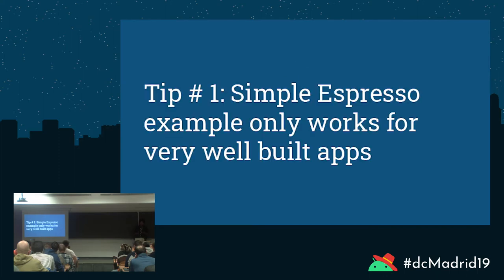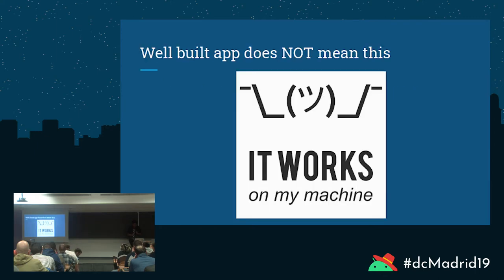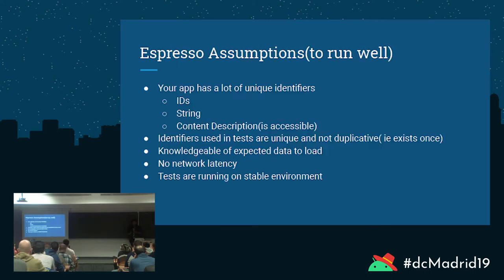What I've learned while writing Espresso tests is that it's actually not that easy. Tip number one: simple Espresso examples work for very well-built apps — and by well-built I do not mean 'it works on my machine.' For Espresso to work well, it makes a couple of assumptions about you as a developer. First, that your app has a lot of unique identifiers it can key on for tests — IDs, strings, content descriptions — basically any unique parameter to verify that an element exists and is available on screen.